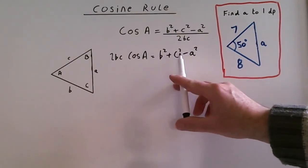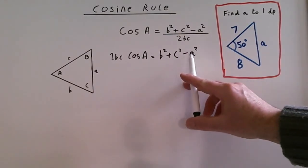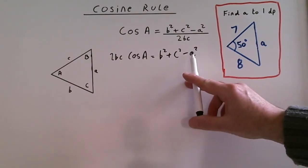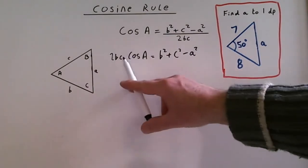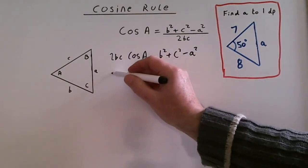If I move this lot, I'll be left with minus a squared. So I'm going to move minus a squared by adding a squared to both sides. We'll get rid of it from here, bring it to the other side, keeps it positive.